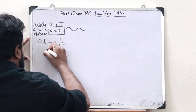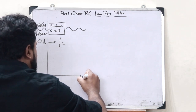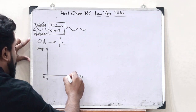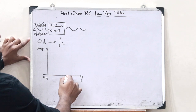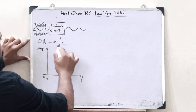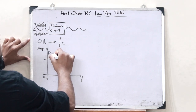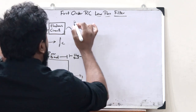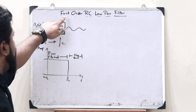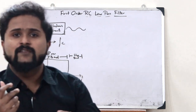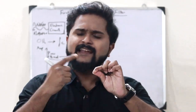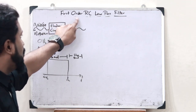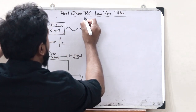If we draw a frequency spectrum of a low-pass filter, with frequency on the x-axis and amplitude on the y-axis, we observe that from 0 Hz to a particular frequency, those frequency components are passed — this is called the pass band. The rest are rejected — this is called the stop band. The term first-order means a circuit that contains just one energy storage element, which can be a capacitor or an inductor. A first-order RC low-pass filter contains one capacitor and one resistor.